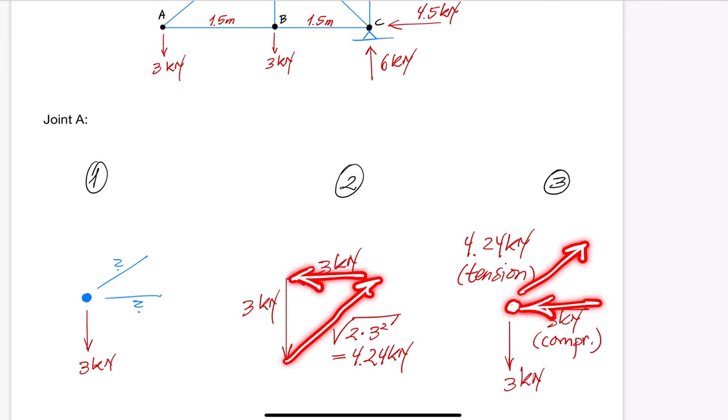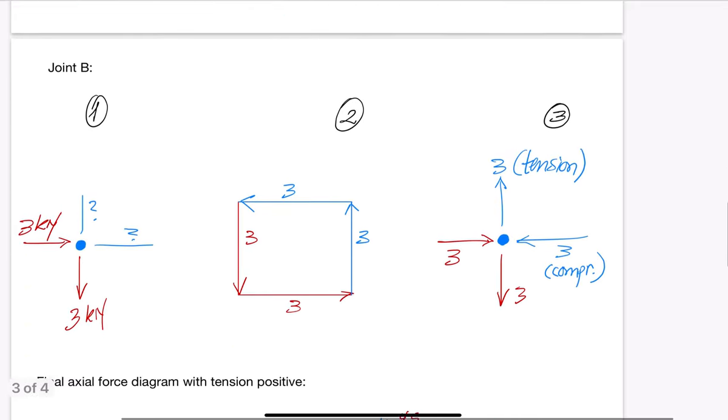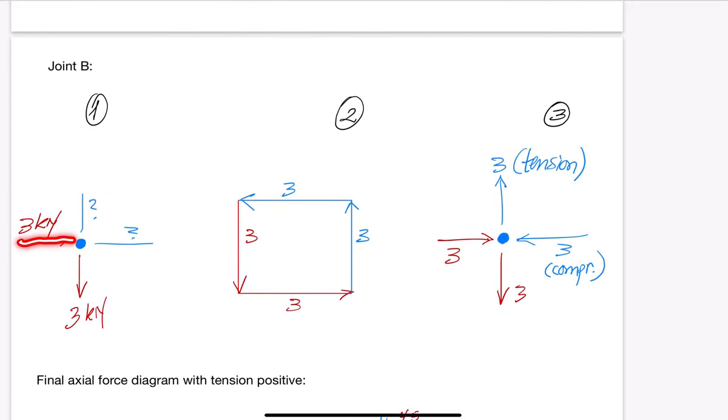The adjacent joint B is addressed next. The horizontal 3 kN force is known from the analysis of joint A. The vertical 3 kN force is an externally applied load. The other two member forces are unknown. This figure shows one way of making the blue arrows bring the path of the force polygon back to the starting point of the known red arrows. The final result for joint B is shown on the right-hand side.